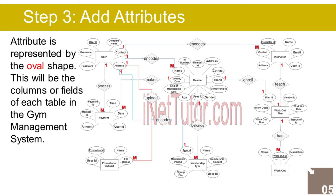The Workout entity has the following attributes: Workout ID (Primary Key, represented with underline), name, description. The Payment entity has the following attributes: Payment ID (Primary Key, represented with underline), Member ID (Foreign Key), time, date, amount, User ID (Foreign Key). The Promotional Material entity has the following attributes: Promotion ID (Primary Key, represented with underline), name, file upload, User ID (Foreign Key).